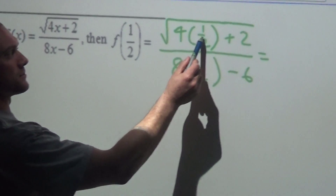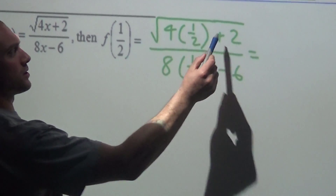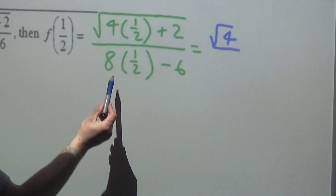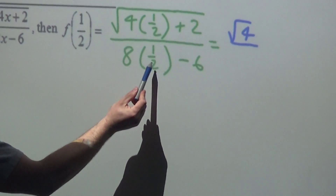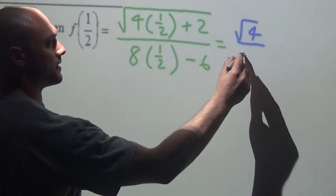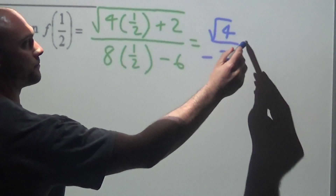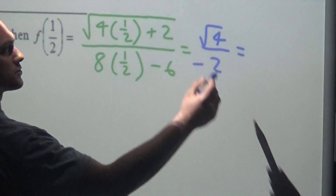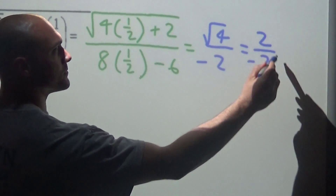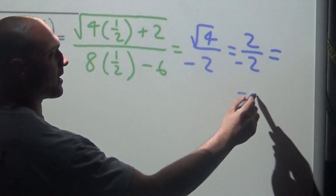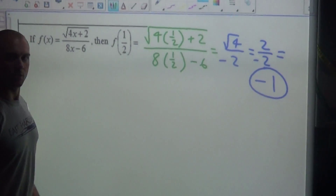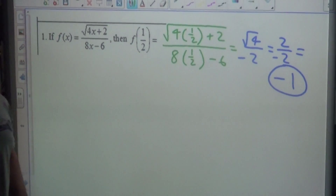4 times 1 half is 2, plus 2, so we're going to have the square root of 4 on top. 8 times 1 half is 4, minus 6, so we get negative 2. Square root of 4 is 2, so we simplify, and we get negative 1. Very nice check.